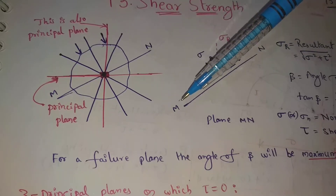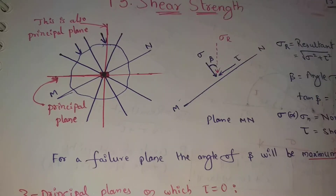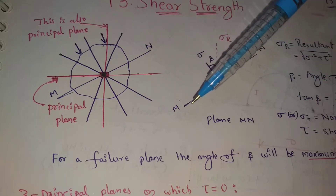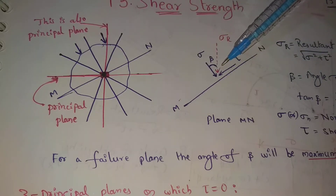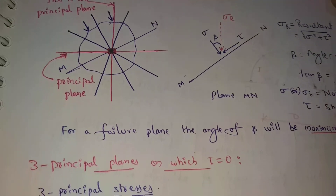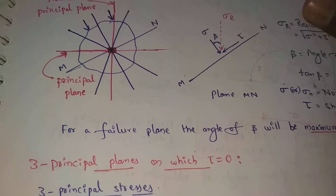For a failure plane, the angle of beta will be maximum. Principal planes are perpendicular to each other.